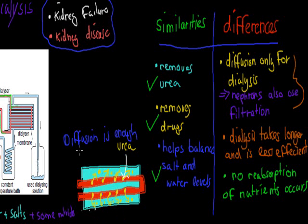The problem with diffusion is that it's too slow for the kidney, but in the dialysis machine, even though it's still slow, the blood takes a lot longer to pass through and we have more time to wait as well. So the differences are: dialysis uses diffusion only, whereas nephrons use both diffusion and filtration. Also, dialysis takes longer — you might have to stay plugged in for three or four hours. And it's also less efficient, meaning there might be a bit of the bad stuff left over.